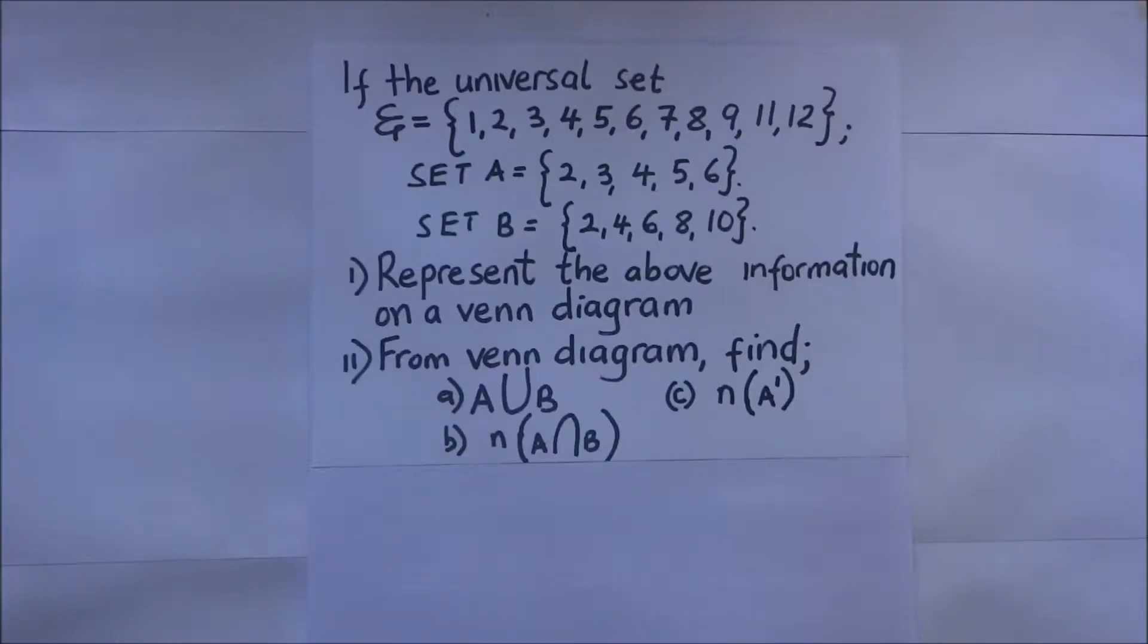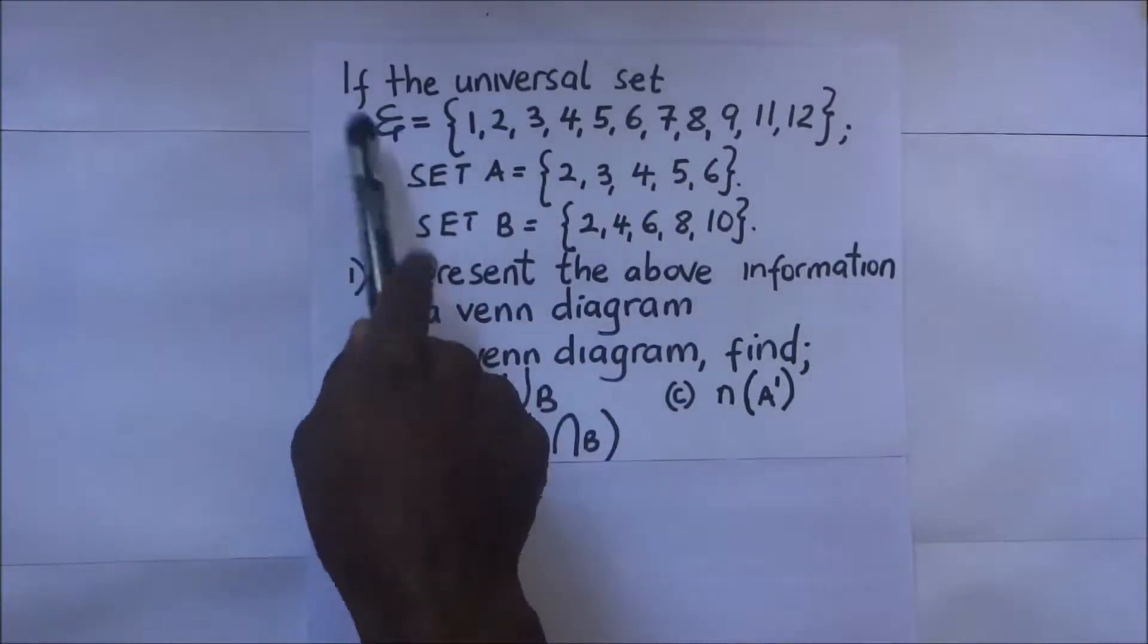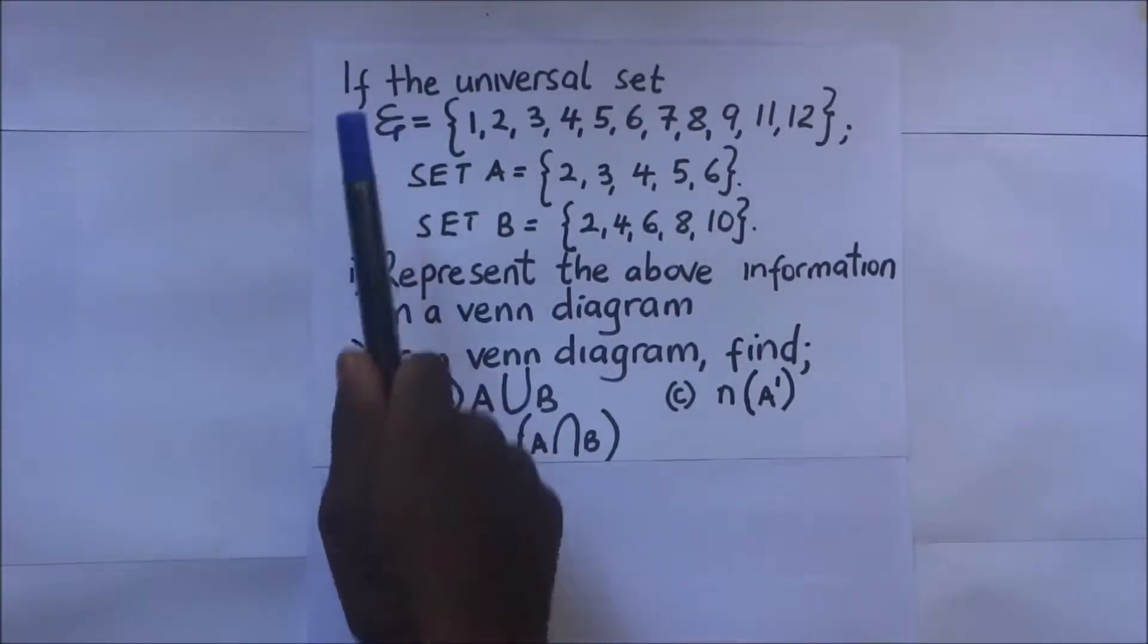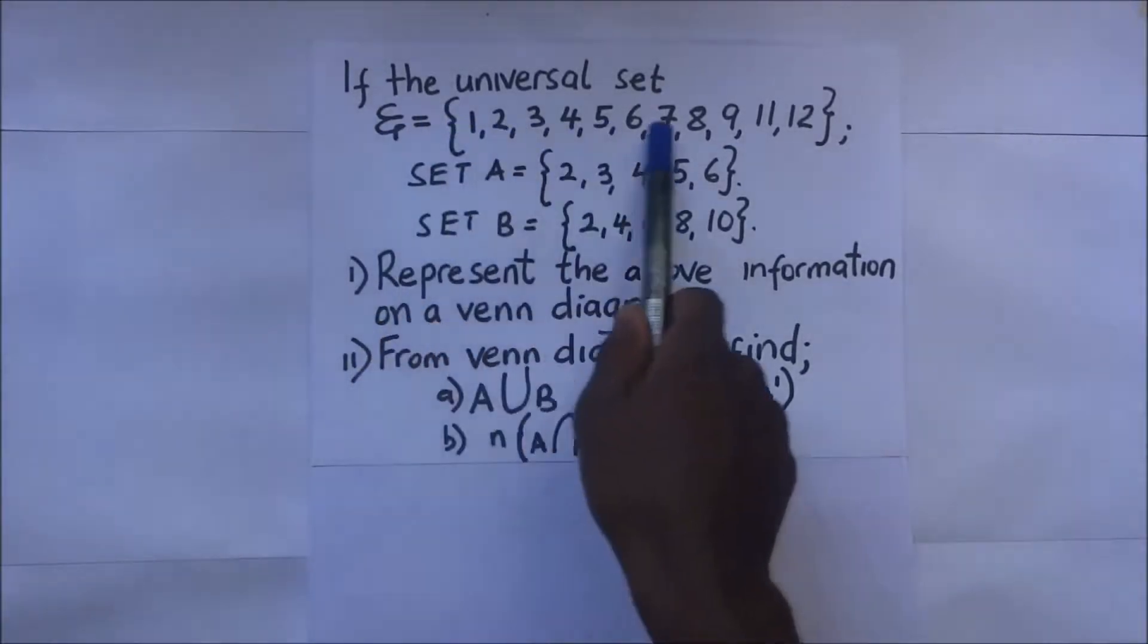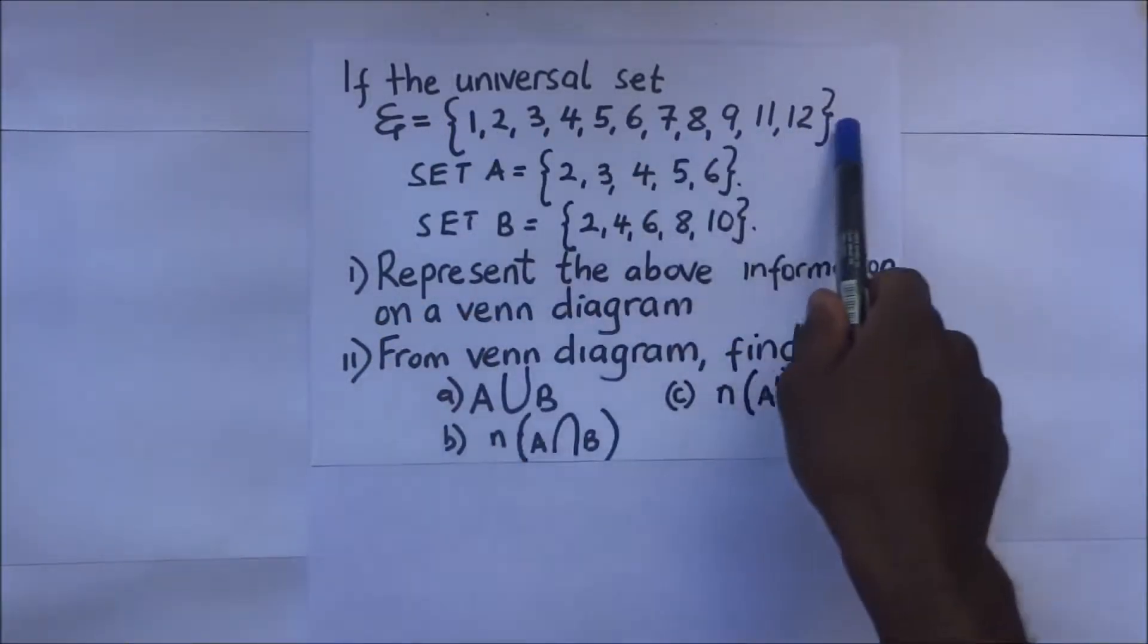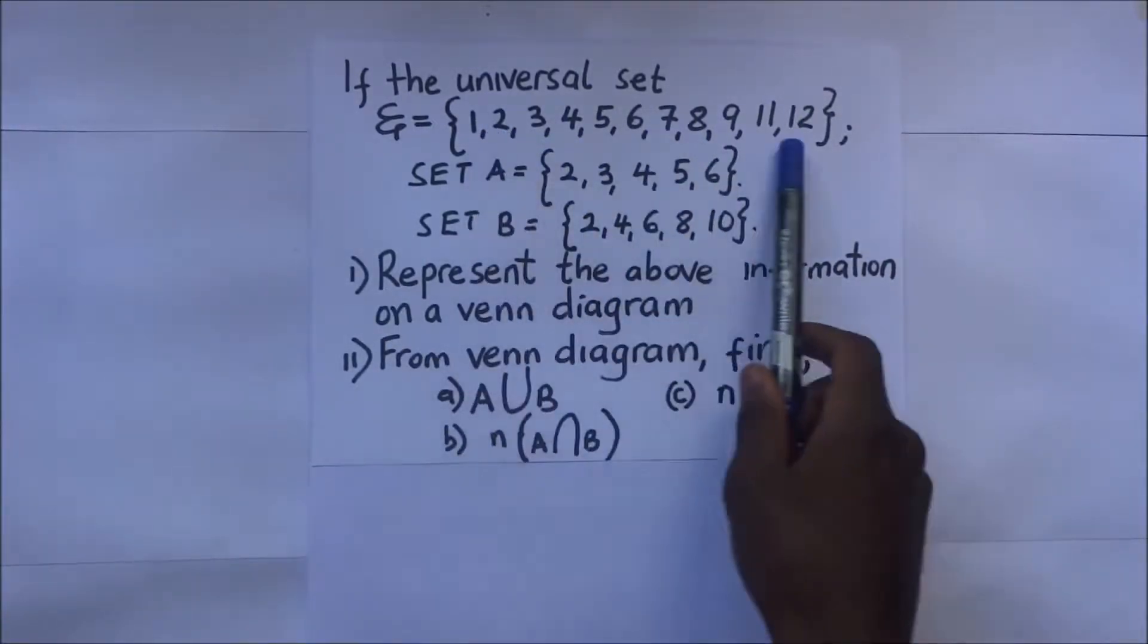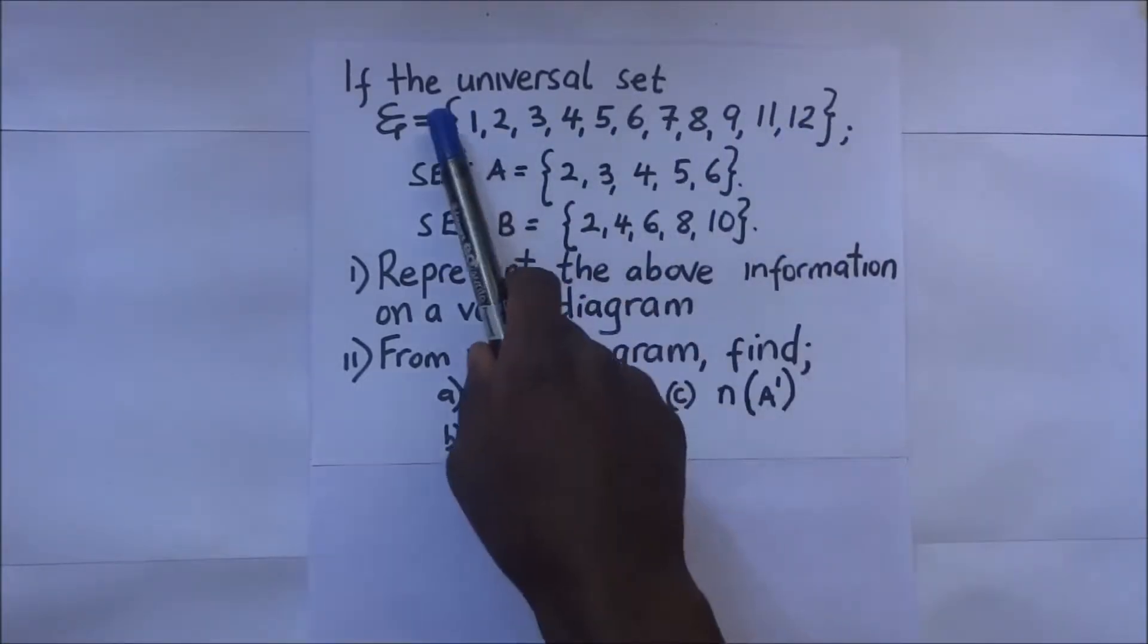Right before us is a problem. They are telling us that if the universal set - remember in a previous video we encountered this notation - represents the universal set. So the universal set is this: it means that all members of this set, whatever sets there could be, all the members are represented within curly brackets.